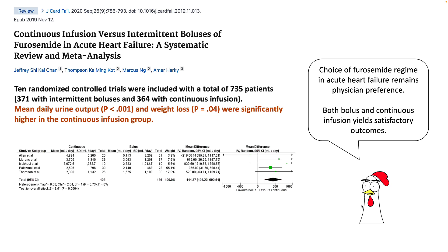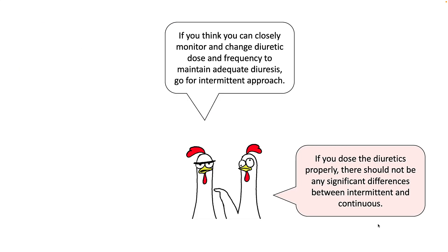In a meta-analysis comparing continuous infusion versus intermittent boluses of furosemide in acute heart failure, mean daily urine output and weight loss were significantly higher in the continuous group. If you dose your diuretics properly, there should not be any difference between continuous and intermittent dosing.